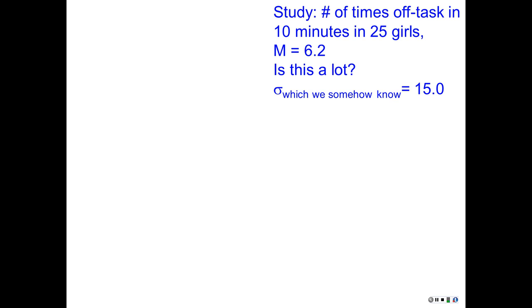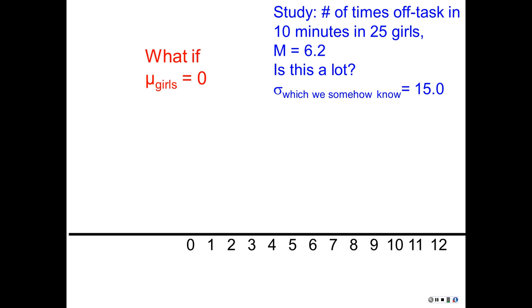Let's look at some examples of null hypothesis testing. Say there's a study where we observe the number of times 25 girls are off-task in classrooms — how often they're off-task in 10 minutes. The mean number of times they're off-task is 6.2 times per girl. We know the population standard deviation is 15.0. What if the true mean of girls of this particular kind is 0? Frequently we have a null hypothesis value of 0.